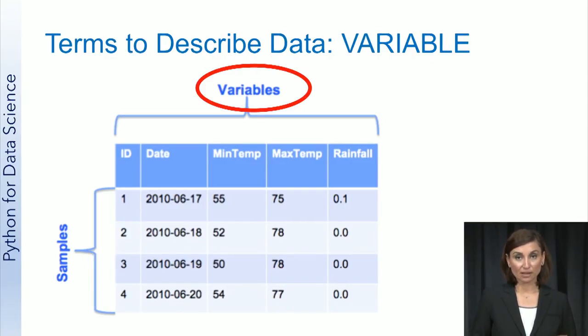In this table, each sample has five values associated with it. These values are different pieces of information about that sample, like the sample date, minimum temperature, maximum temperature, and rainfall on that date. We call these different values variables of the sample, and sometimes refer to them as features of the sample.